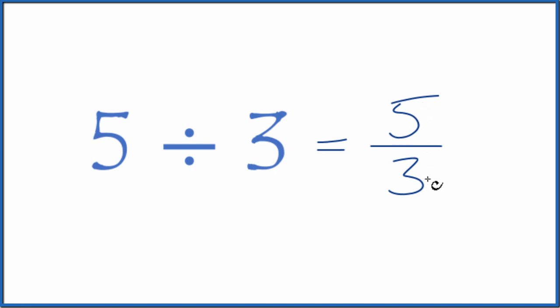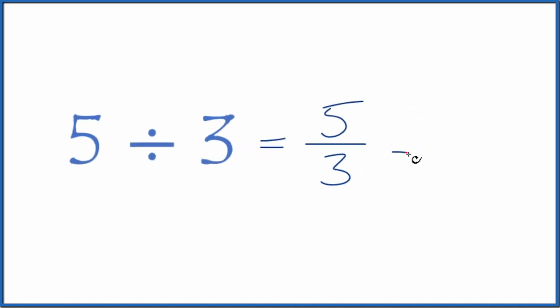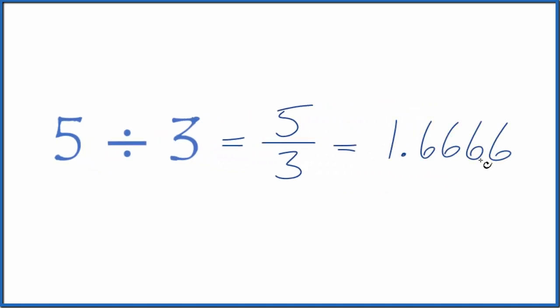If you were to divide 5 by 3 on your calculator, you'd end up with 1.666... And since the 6 just keeps repeating, let's put a bar here and then get rid of this.